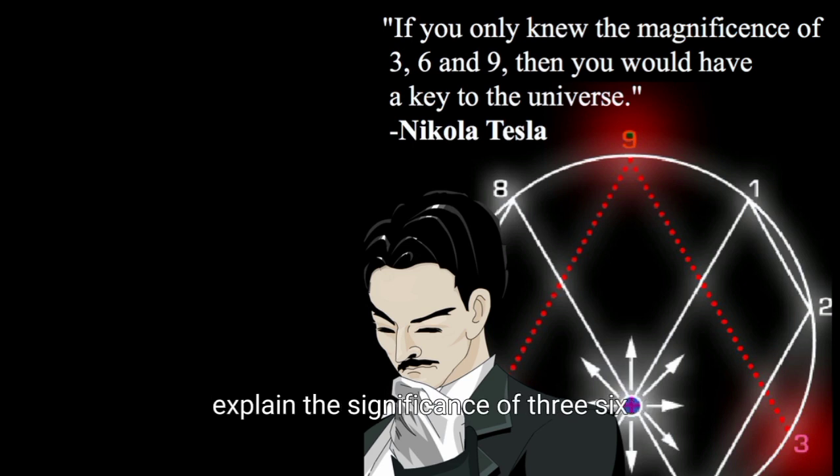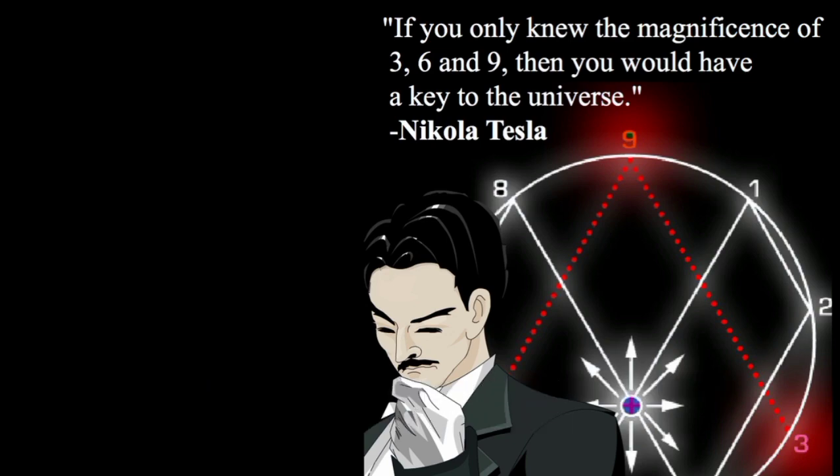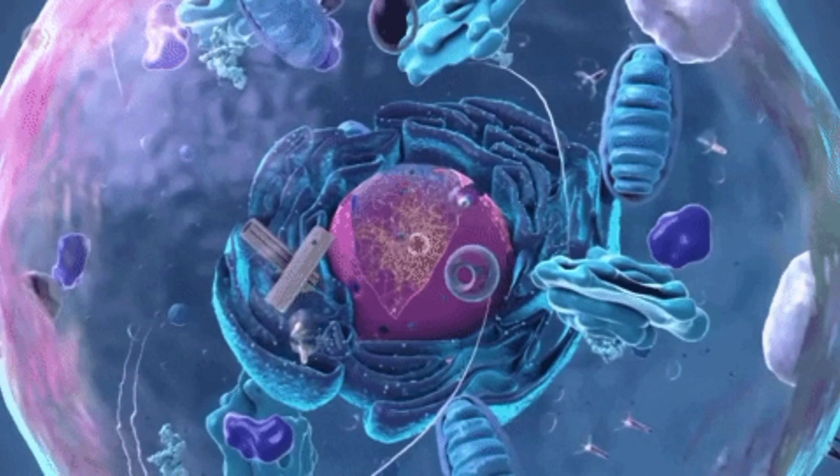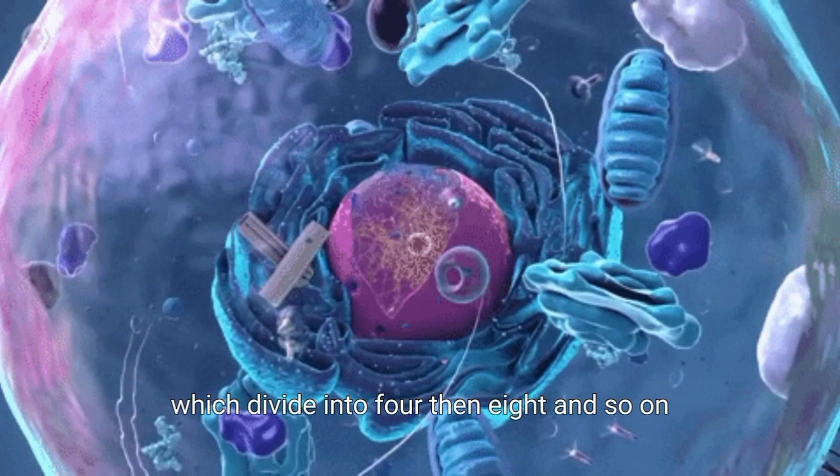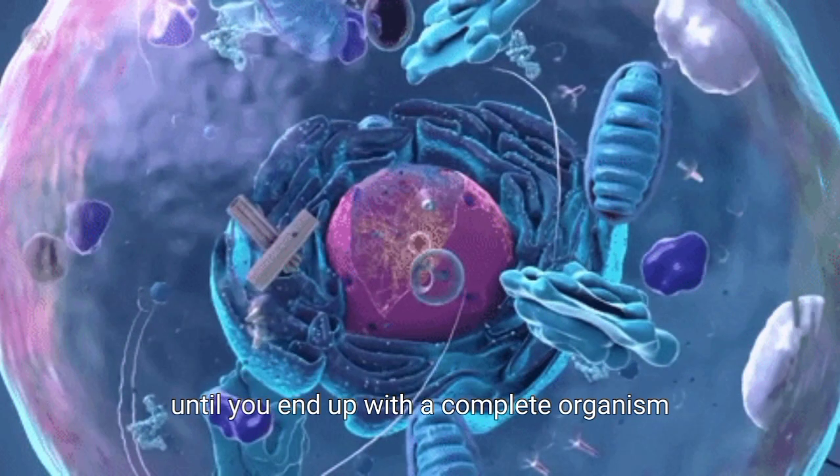People often explain the significance of 3, 6, 9 with something called vortex mathematics. Vortex mathematics refers to the pattern that emerges when we observe the natural and divine processes of our universe. For example, all life begins with one cell. That cell then divides into 2, which divide into 4, then 8, and so on, until you end up with a complete organism.